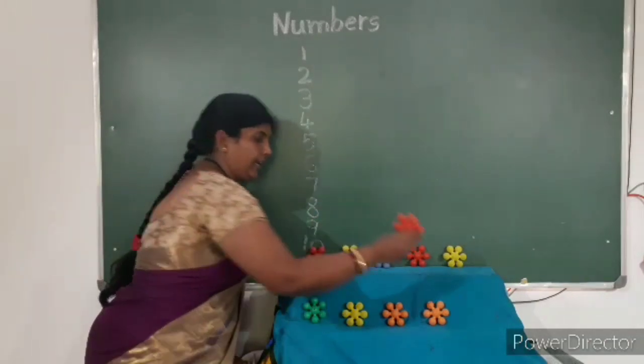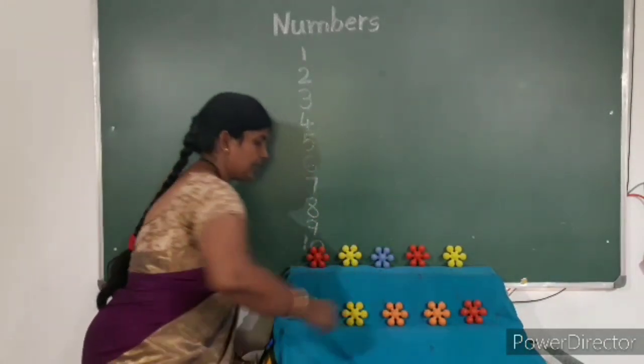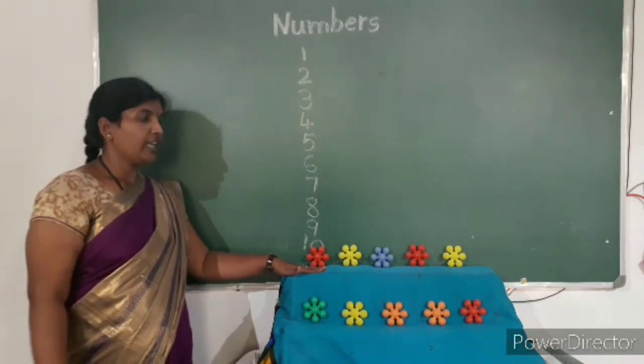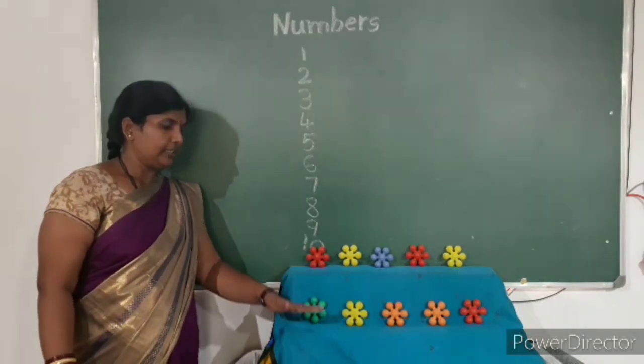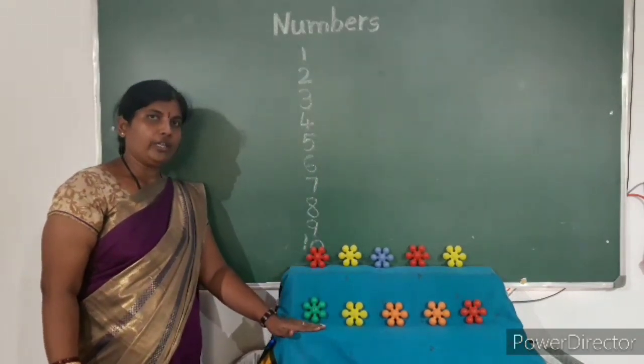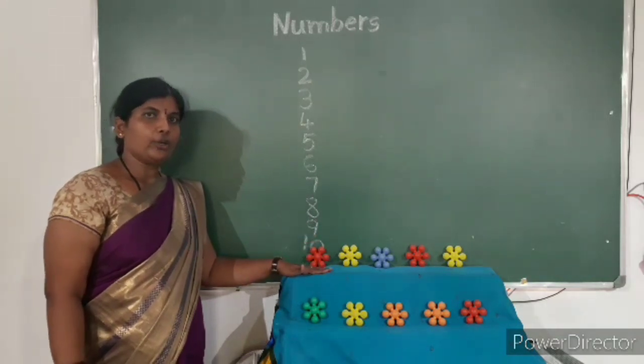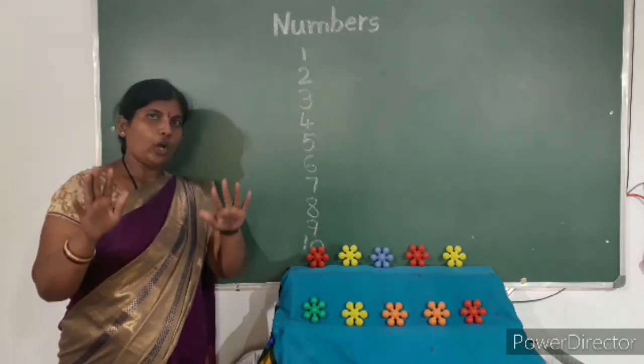Here this row is 5 toys and this row is 5 toys. Total, how many toys are there? Total, 10 toys.